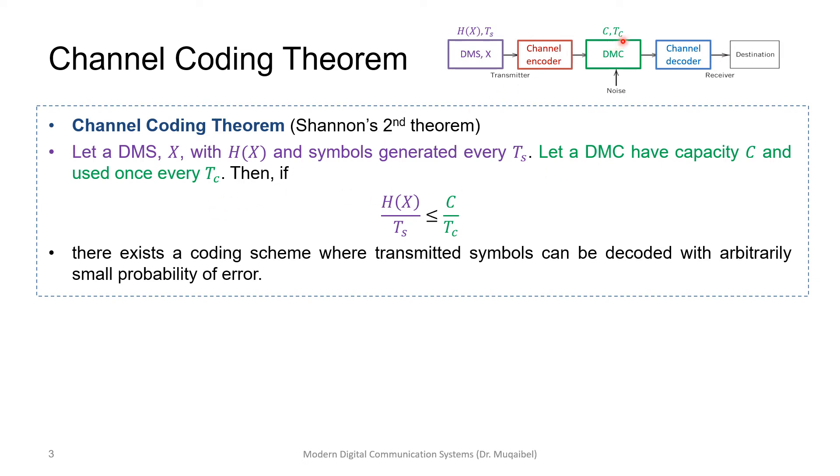We have T_c here (time per channel use) and here the time of symbol generation. This theorem says: If we keep the ratio between the entropy H(X) divided by T_s less than or equal to the capacity C divided by T_c, then there exists a coding scheme where transmitted symbols can be decoded with arbitrarily small probability of error.